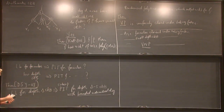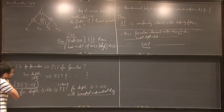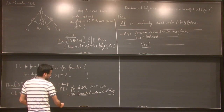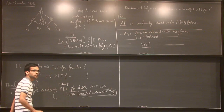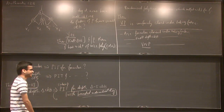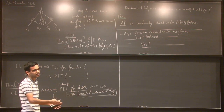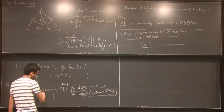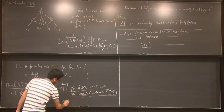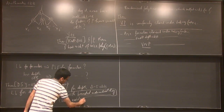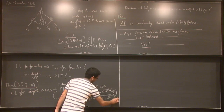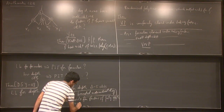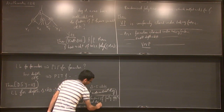Bounded individual degree means you need the guarantee that your circuit computes a polynomial such that the degree of each variable is at most something. We would really like to prove this theorem without this condition. Without the 'minus 5' would also be nice — that would immediately give us PIT for things we don't know. One of the main technical ingredients of their proof was a closure result for factors of polynomials with bounded individual degree and low depth.